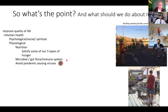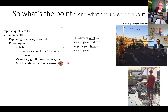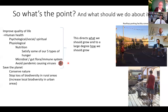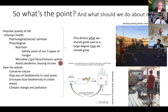Microbial gut flora and immune system factors are also important, as is of course avoiding pandemic-causing viruses. These factors direct what we should grow and to a large degree how we should grow in the city. Factors related to saving the planet — conserving nature, stopping loss of biodiversity in rural areas, increasing local biodiversity in urban areas, climate change, and pollution — relate to the need for recycling nutrients in the city: reducing demand, reducing loss, and increasing internal recycling.